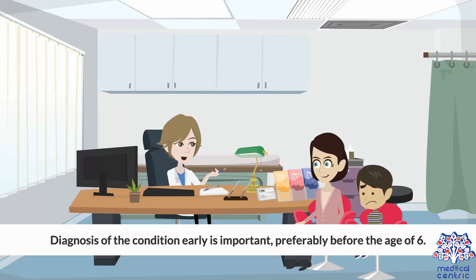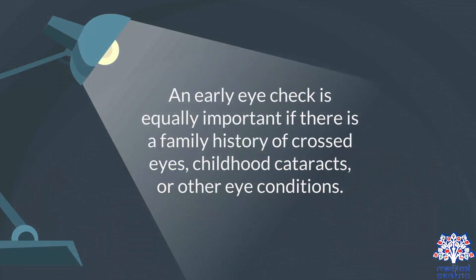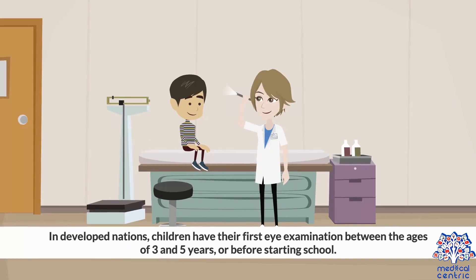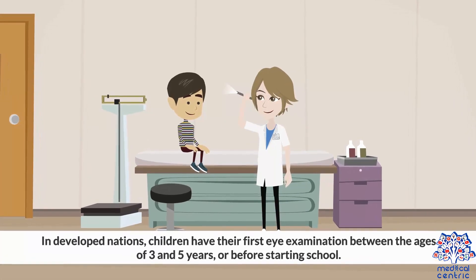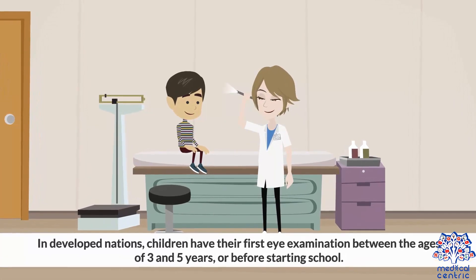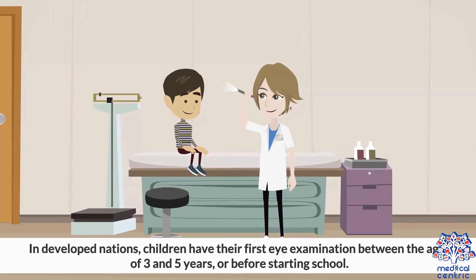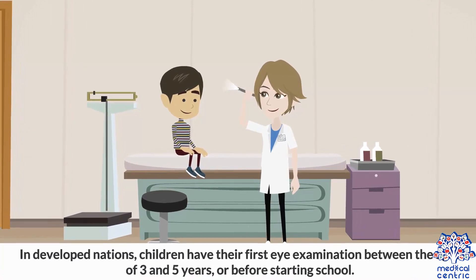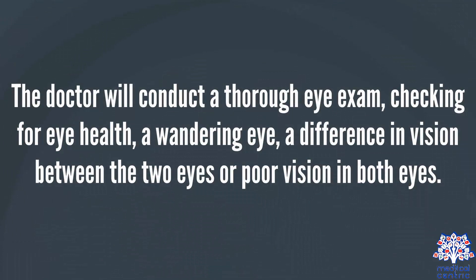Diagnosis of the condition early is important, preferably before the age of six. An early eye check is equally important if there is a family history of crossed eyes, childhood cataracts, or other eye conditions. In developed nations, children have their first eye examination between the ages of three and five years, or before starting school. The doctor will conduct a thorough eye exam, checking for eye health, a wandering eye, a difference in vision between the two eyes, or poor vision in both eyes.